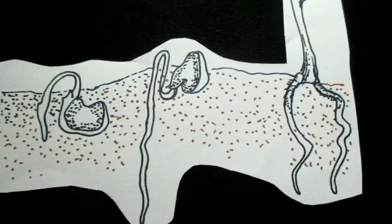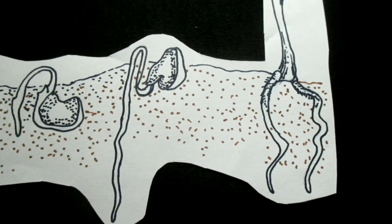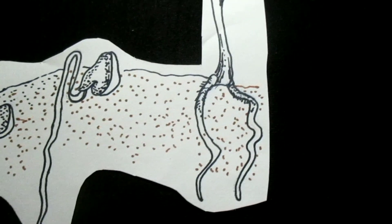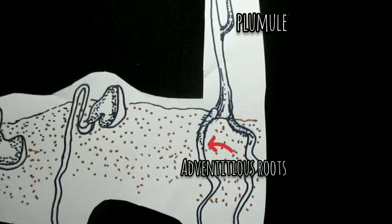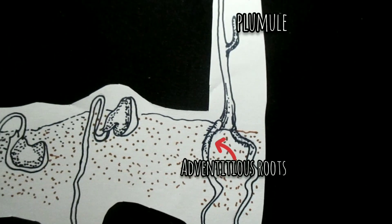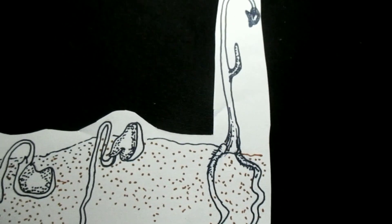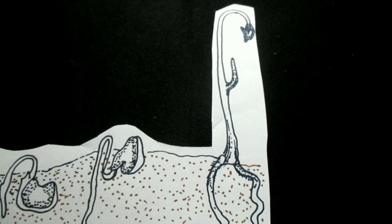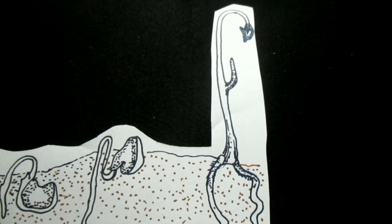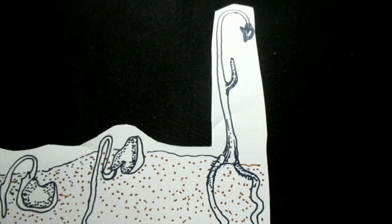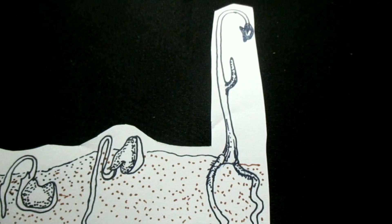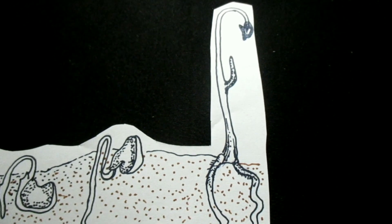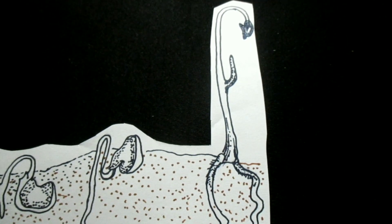The plumule now pierces this cotyledon sheath and forms the first cylindrical foliage leaf. Meanwhile, adventitious roots develop from above the radicle, forming a fibrous root system which is characteristic of monocots. It should be noted that in this case, the seed is pushed out of the soil not by the growth of the hypocotyl as in other cases, but by that of the base of the cotyledon itself.